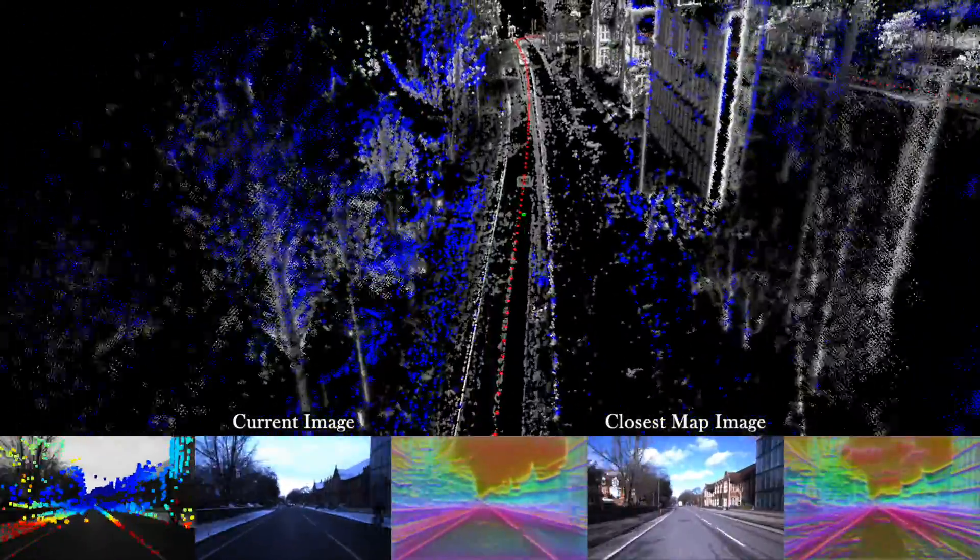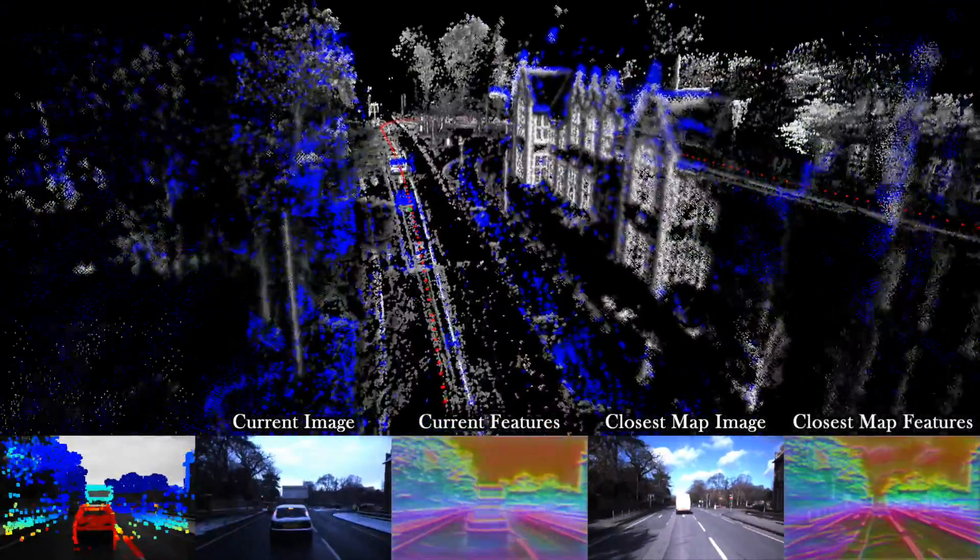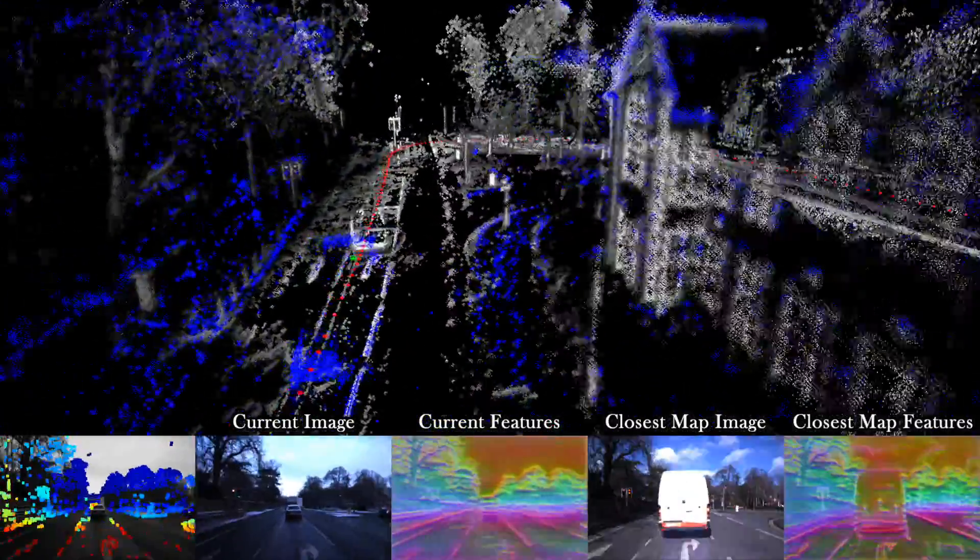In the bottom row you can see the current image, the closest map image, the current features, the closest map features and the sparse depth map.